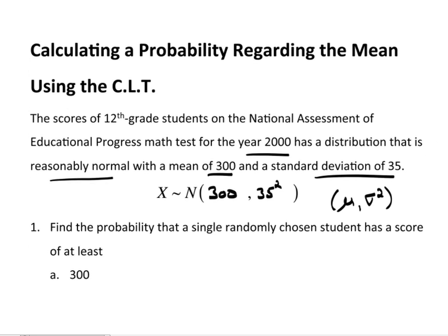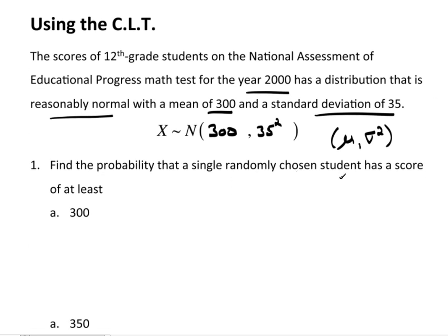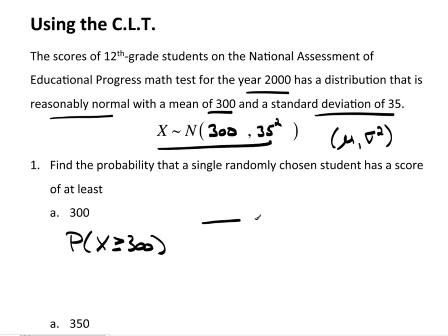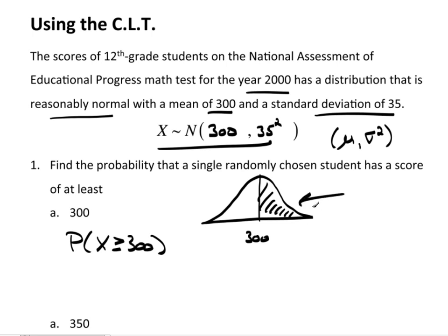First, let's find the probability that a single randomly chosen student has a score of at least 300. So the probability statement is: what is the probability that x is at least 300? If I draw a picture, 300 is right down the middle. I need at least 300, which is 300 or more. Since this is the mean of a bell-shaped curve, that probability is 0.50 — it's a half.